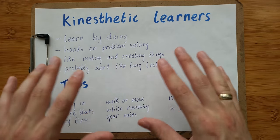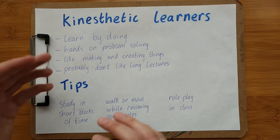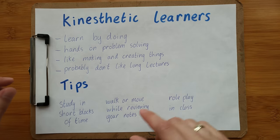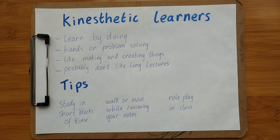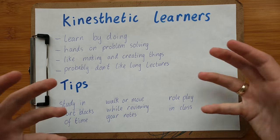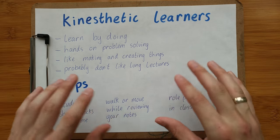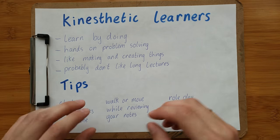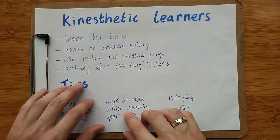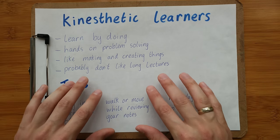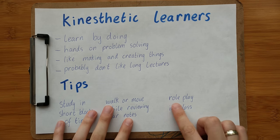If a kinesthetic learner tried to sit down for two or three hours with a book, they probably won't learn much. But if they sat down for 20 minutes, had a five-minute break, then did another 20 minutes, those short blocks of time will help them learn. Another thing they can do is walk or move while reviewing their notes — maybe throw a ball or use a fidget spinner — and they'll find it much easier to remember.